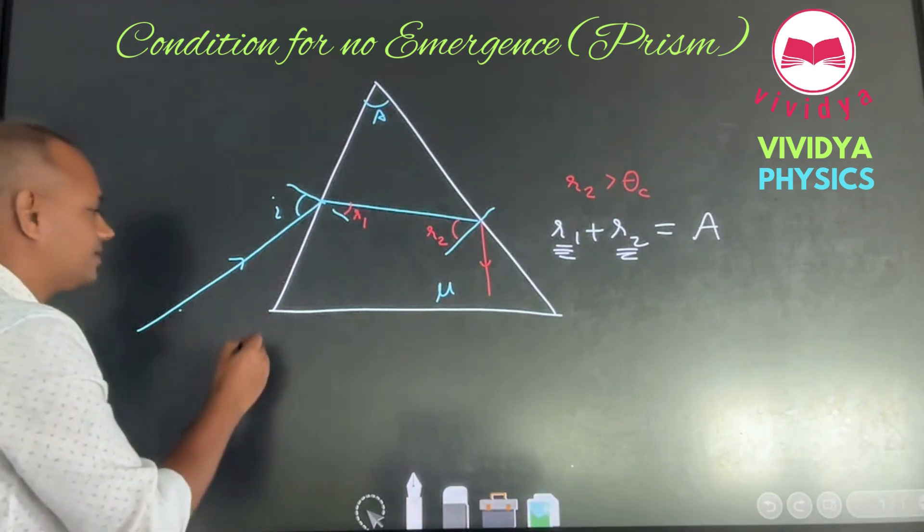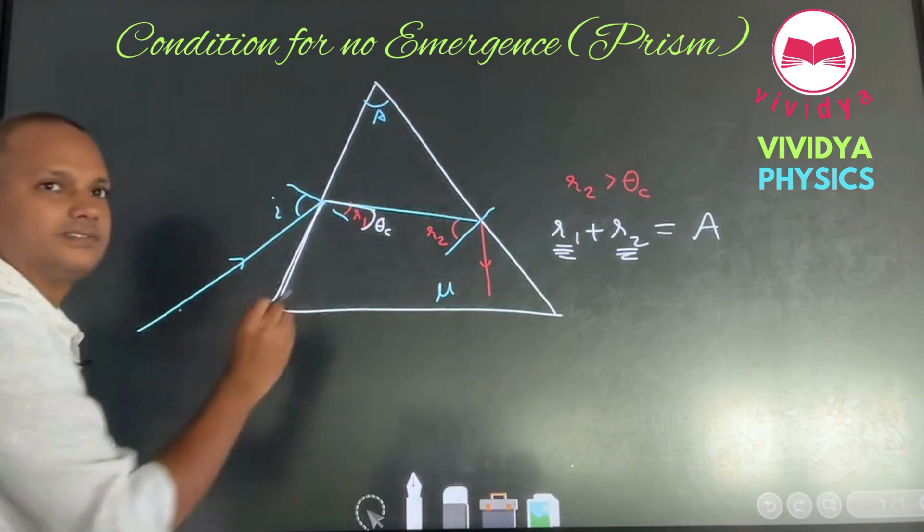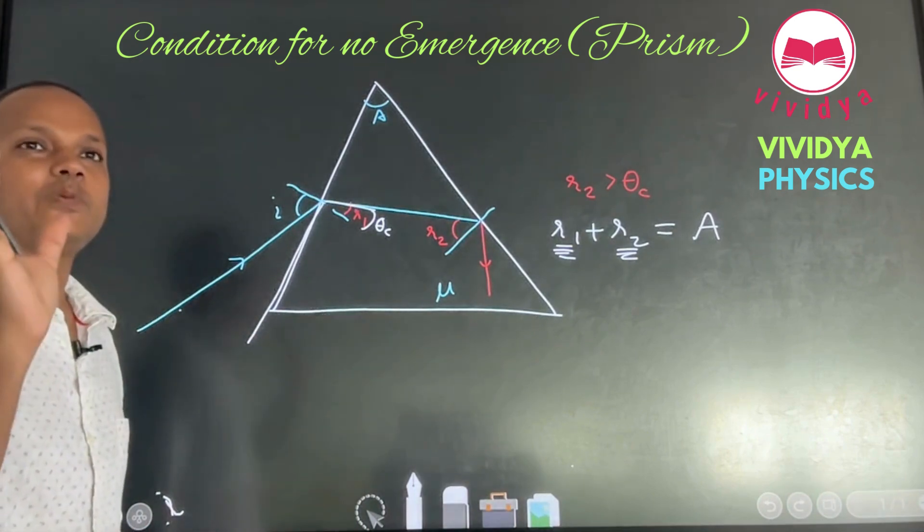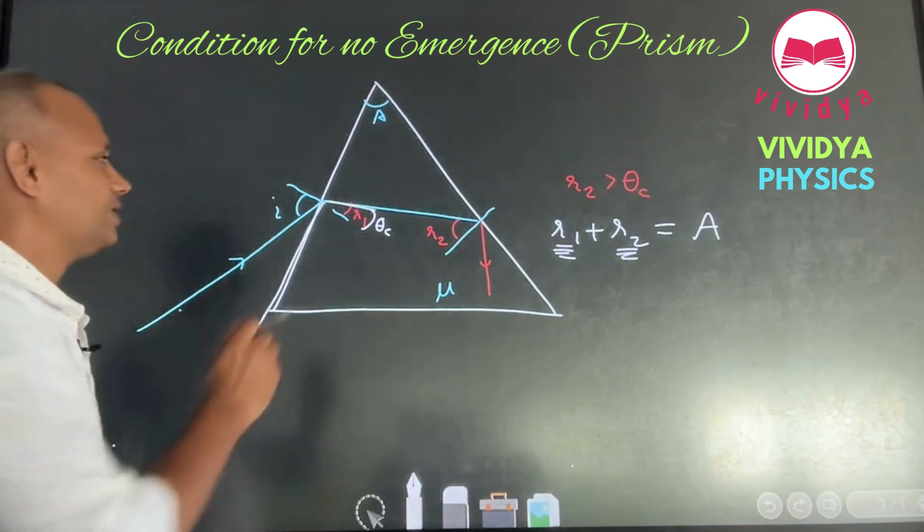Even when the ray is grazing, then R1 is the critical angle itself. The maximum value of R1 is critical angle. The maximum value of a ray inside the denser medium is the critical angle, right? This is the critical angle.